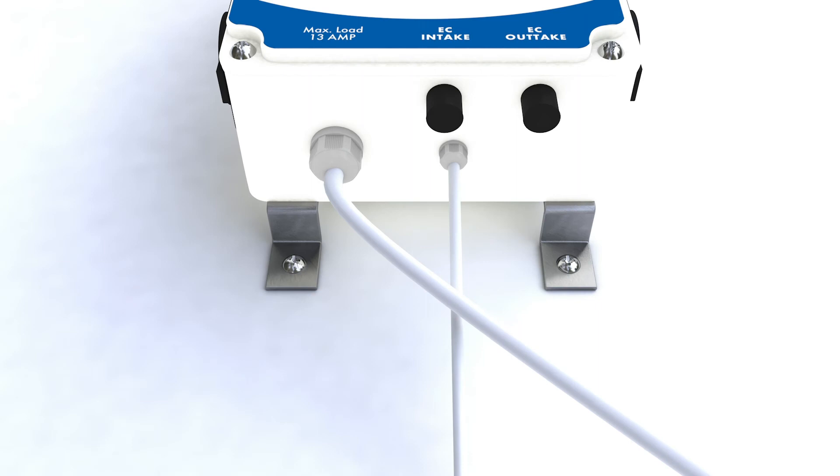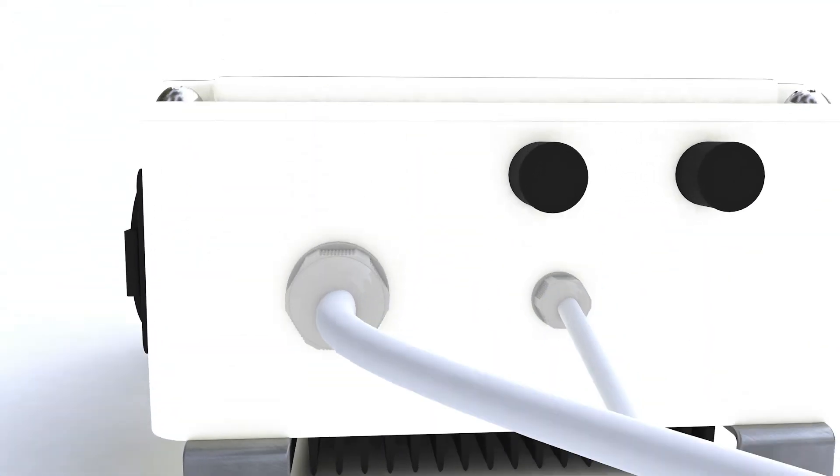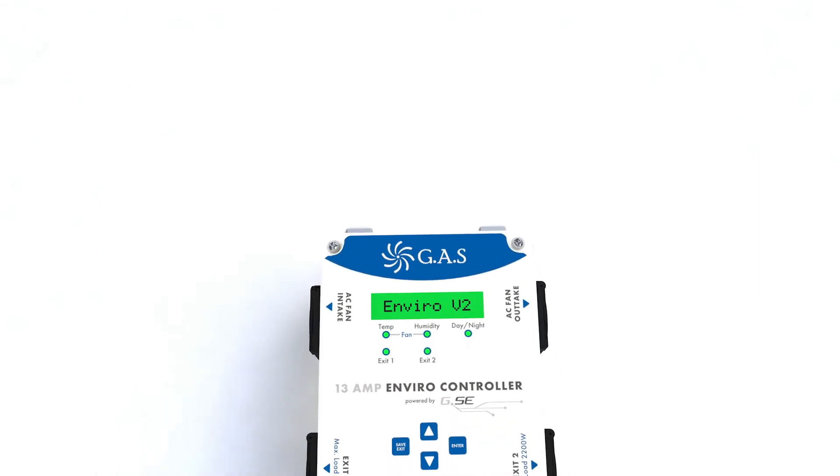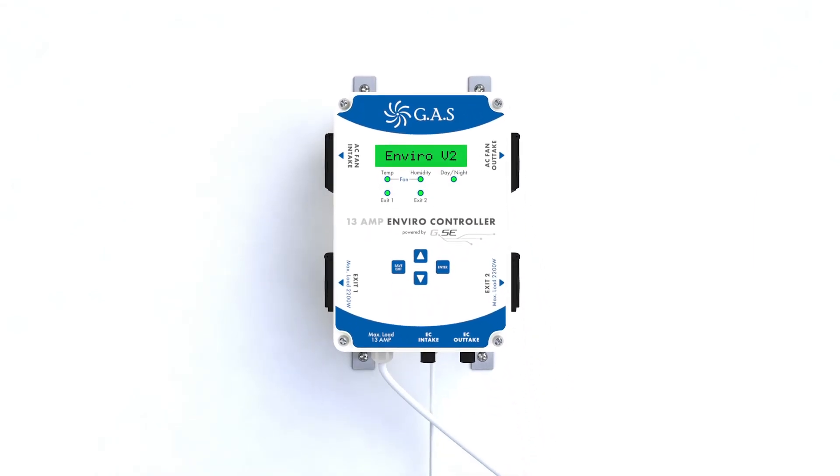The unit comes complete with mounting brackets and includes a heat sink to keep the unit running cool. Maintain the perfect grow environment with the Gas EnviroController.